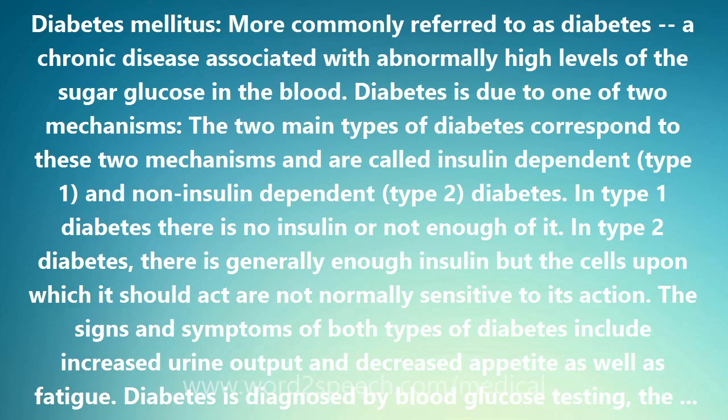In type 1 diabetes, there is no insulin or not enough of it. In type 2 diabetes, there is generally enough insulin but the cells upon which it should act are not normally sensitive to its action.